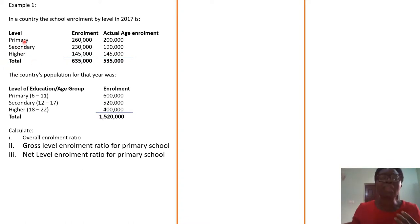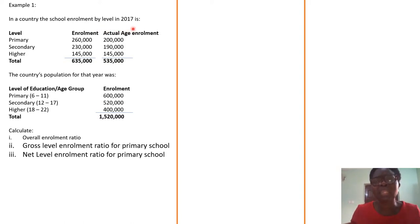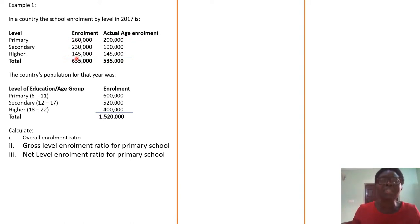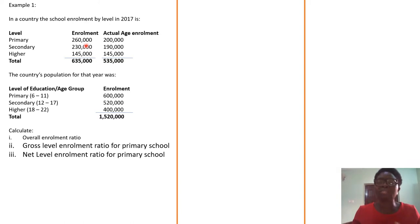In the country, the school enrollment by level in 2017 is as follows. We have the level, those that are enrolled, and we have the actual age enrollment. There is a difference between enrollment and actual age enrollment. Those enrolled — all the numbers that are enrolled — for example, those in primary school: we have 260,000 of them enrolled in primary school.